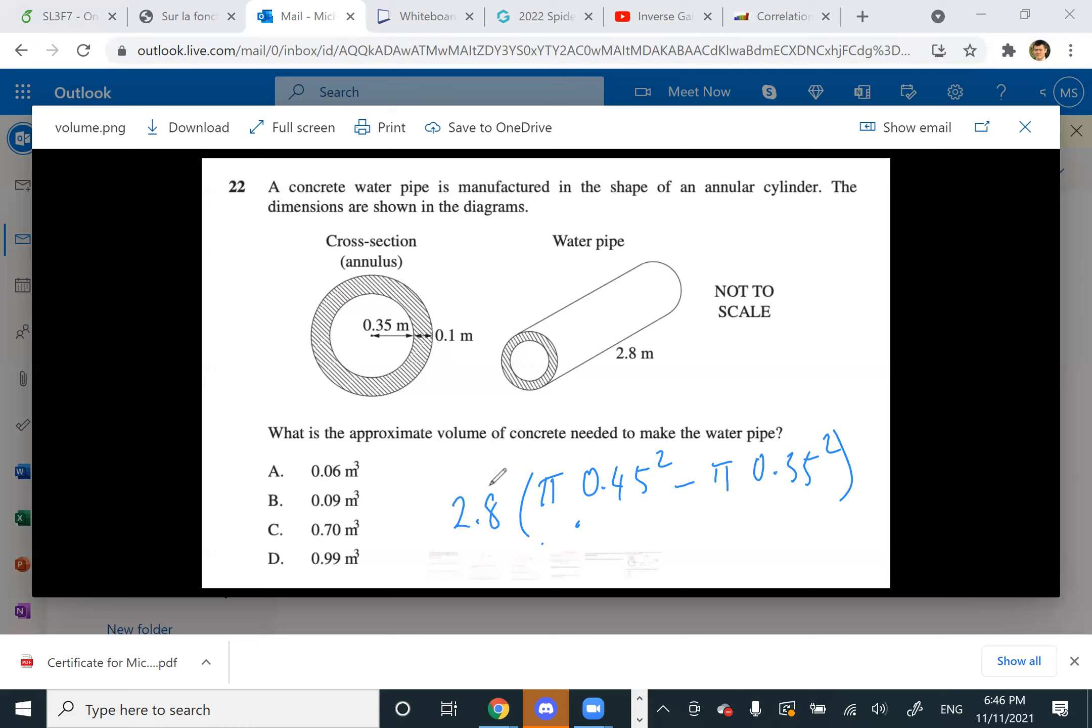When it says approximate, it makes me tempted to just kind of figure it out. Yeah, 0.35, so then that equals 0.7. Which is right, so yeah there you go.